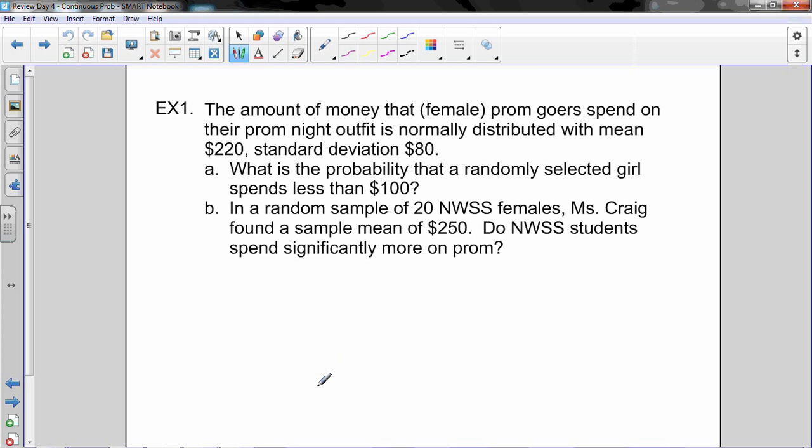The amount of money that female prom goers spend on their prom night outfit is normally distributed with mean $220, standard deviation $80. So right away that tells us that X, which is the amount spent, is normally distributed with mean 220, standard deviation 80. That tells us the shape of the distribution, like 68% of the people are within one standard deviation. What is the probability that a randomly selected girl spends less than $100?